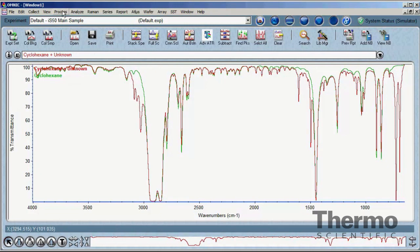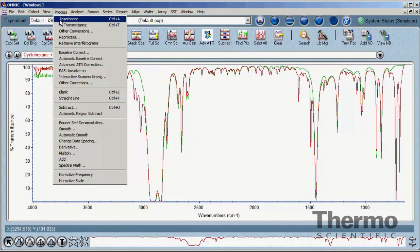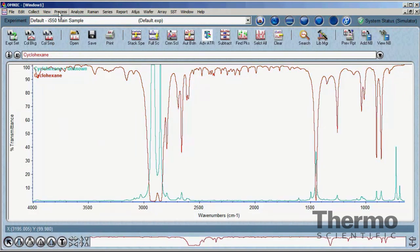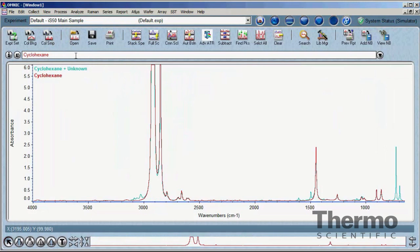Before the interactive subtraction can start, the spectra need to be in a linear y-axis scale. Absorbents, log 1 over R, Kubelka-Munk are some examples.